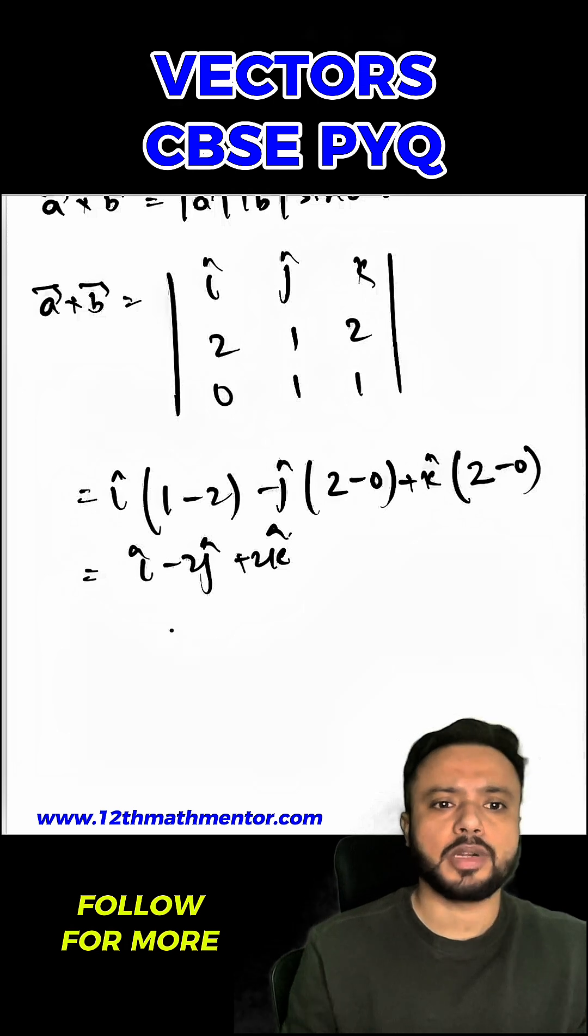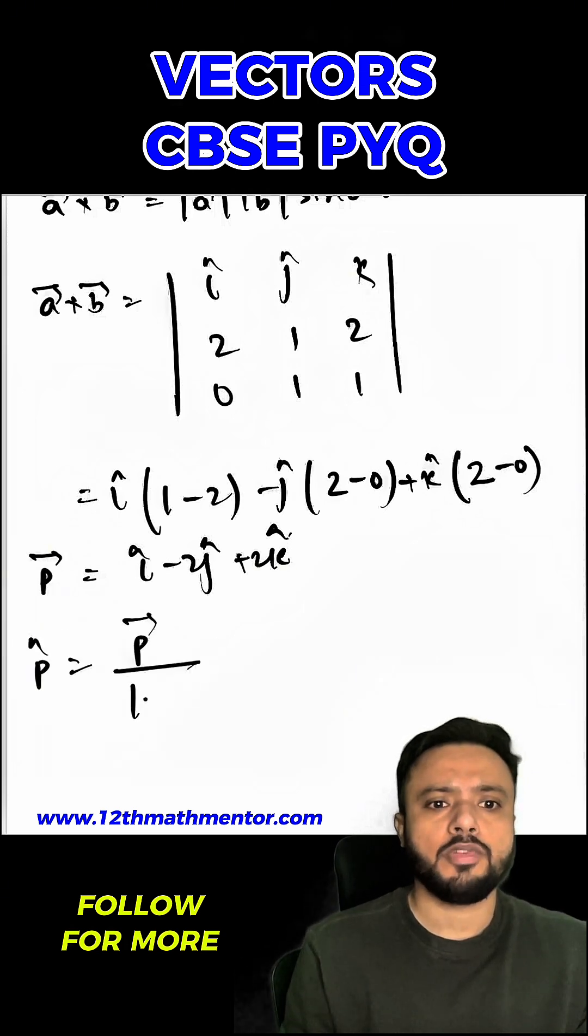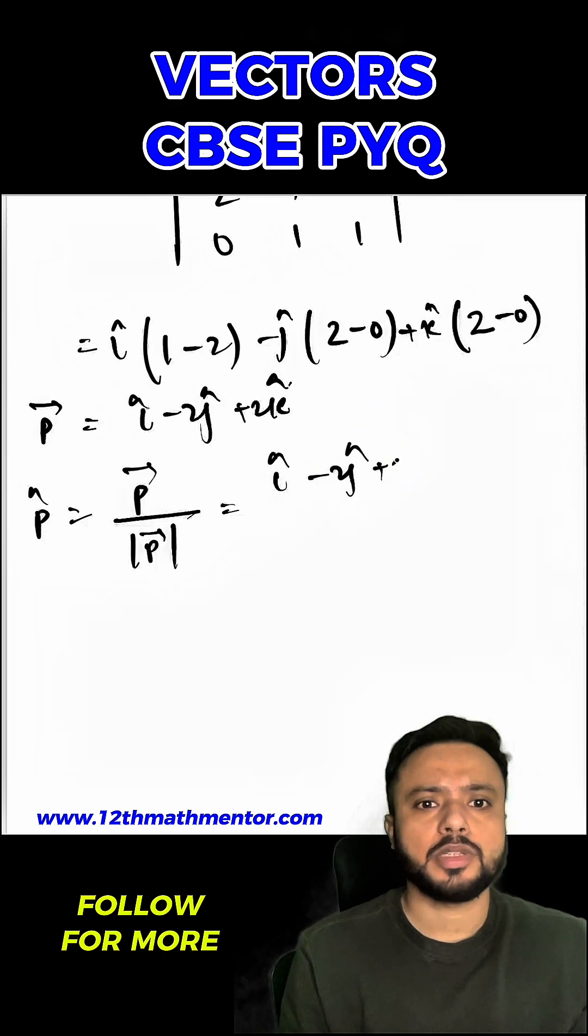this is perpendicular to both A vector and B vector. So let's assume it as P vector. So this unit vector, that is going to be P vector upon mod of P vector, which is I cap minus 2 J cap plus 2 K cap,